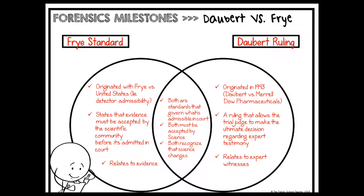The Daubert ruling originated in 1993 with the Daubert versus Merrill Dow Pharmaceuticals case. It allows the trial judge to make the ultimate decision regarding expert testimony — specifically who is allowed to come into the courtroom and testify as an expert. Whereas the Frye standard deals with evidence, the Daubert ruling deals with expert witnesses. Both are standards that govern what is admissible in court, both require acceptance by science, and both recognize that science constantly changes and are willing to adapt.